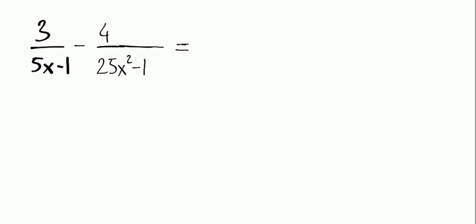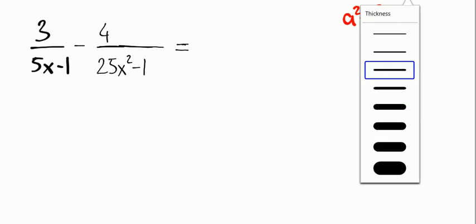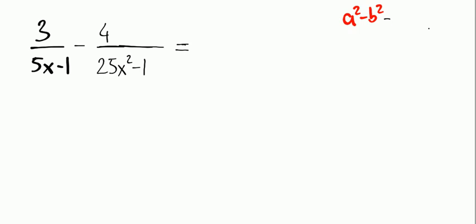We know that a squared minus b squared equals a minus b times a plus b. So 25x squared minus 1 can be factored.